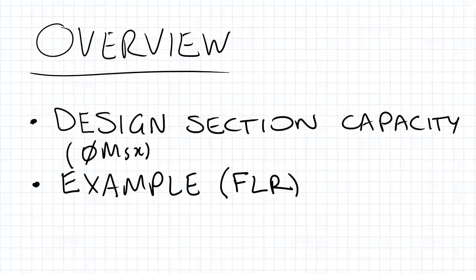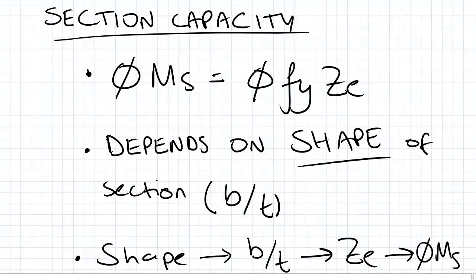Hi guys, just a quick overview of what we'll be covering today. We'll be looking at the design section capacities Phi MSX and how that leads into flexural torsional buckling FTB. What I want to do is go over some of the stuff we've learned and use that to move forward and also do an example of a beam with full lateral restraint FLR along its entire length.